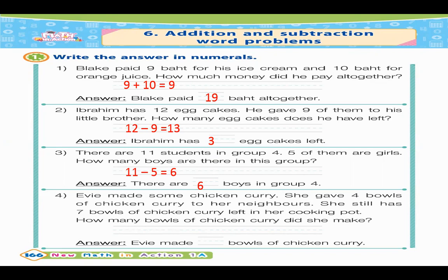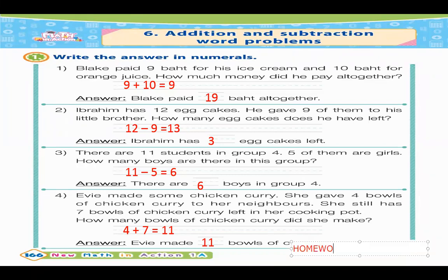Number four: 4 plus 7 equals 11. Eve made 11 balls of chicken curry. Again, this was your homework last time. Okay, so now let's go to the next page.